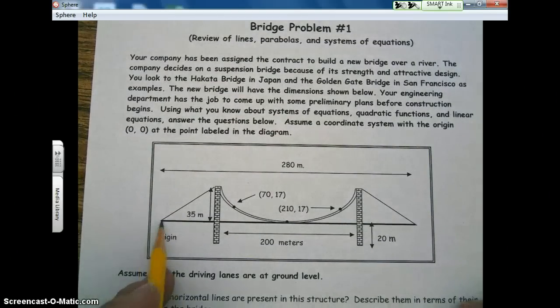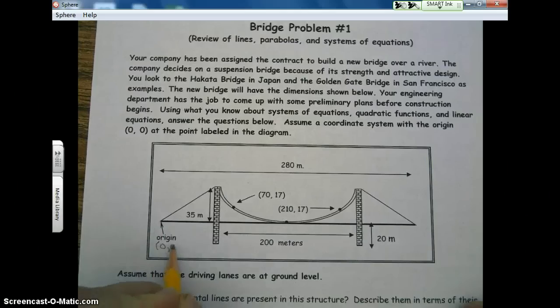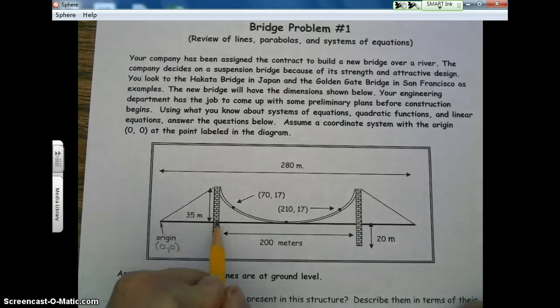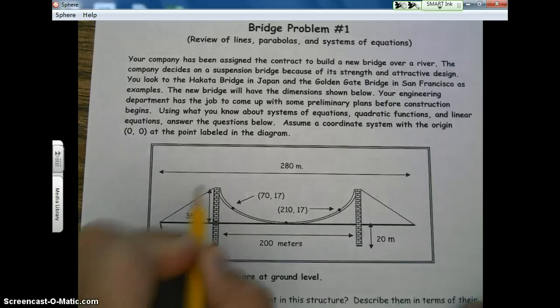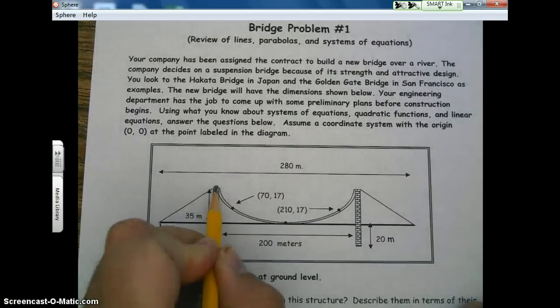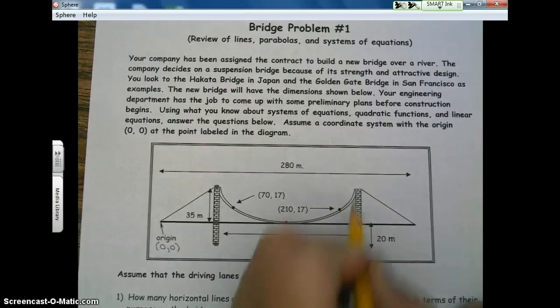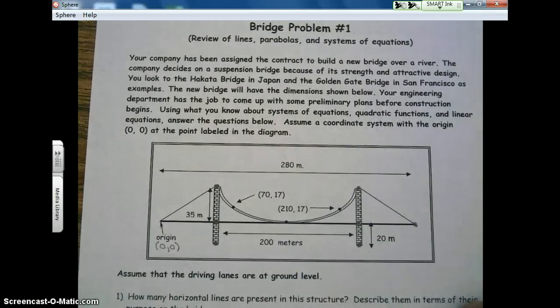Notice they tell us the origin is here. Remember that the origin represents 0, 0. So what you're going to want to do first here is you're going to want to get some coordinates. So put some dots here on your bridge. And we're going to find these coordinates first thing.